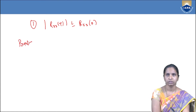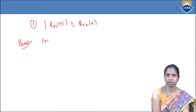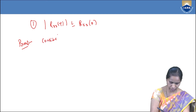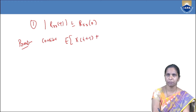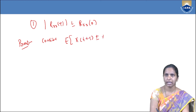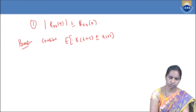Let us prove each and every property. What is the first property? |R_xx(τ)| ≤ R_xx(0).